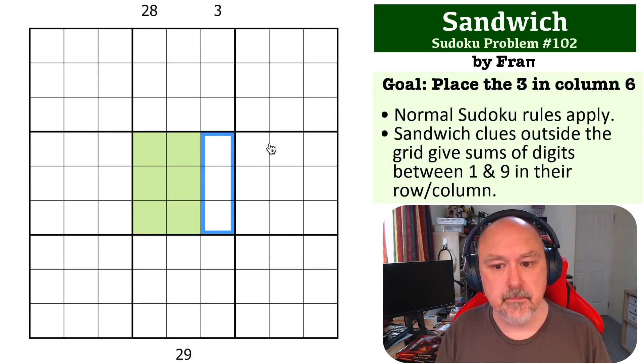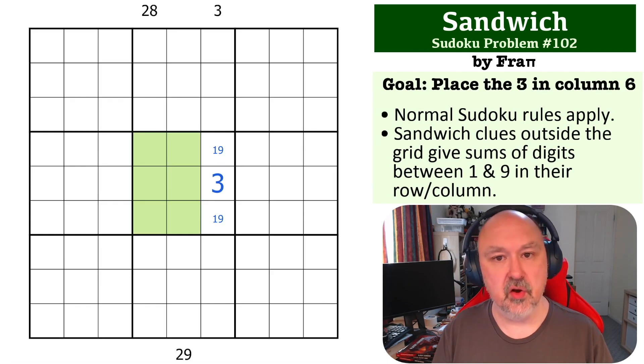So now we know the one and the nine in this box must be in here. But with the one and the nine being in here and there having to be a three between them, we can immediately say that the one and the nine cannot be right next to each other. Because if they were, this would be a zero clue. And the digit that has to be between them is the three that we have to place in the column.